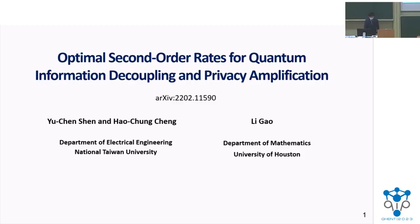Hello, I'm Yuchen Shen. Today I'm going to talk about my work with Professor Hao Zhongzhen and Di Gao. My topic is about optimal second-order rate for quantum information decoupling and privacy amplification.